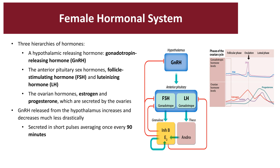GnRH is released from the hypothalamus and increases and decreases somewhat less drastically than FSH and LH, but it is secreted in bursts or pulses every 90 minutes. You can see the approximate change in concentration of the anterior pituitary gonadotropic hormones FSH and LH, and compare that with the ovarian hormones estradiol and progesterone. Over a 28-day cycle, estrogen increases substantially in the beginning weeks, then is overtaken by progesterone as that matures and prepares the uterus for implantation. LH peaks midway in the cycle to cause ovulation, and FSH also spikes high as well.